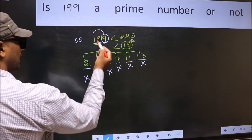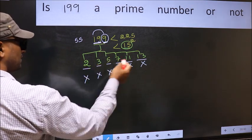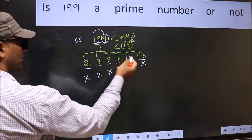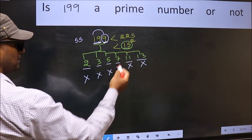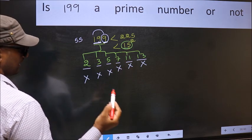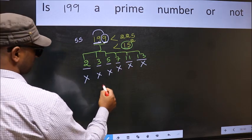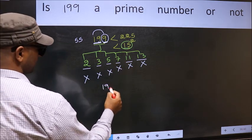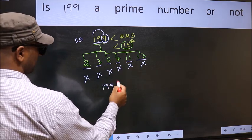So 199 is not divisible by any of these numbers. Hence, 199 is a prime number.